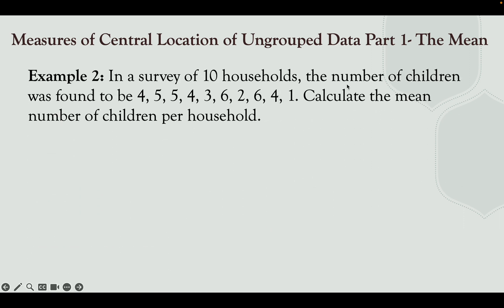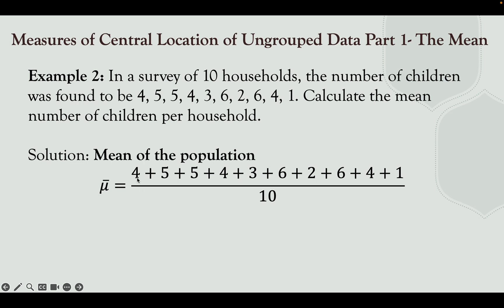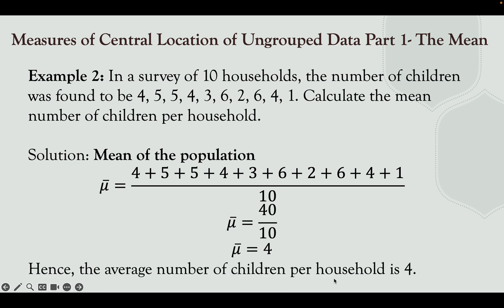Example 2: In a survey of 10 households, the number of children was found to be 4, 5, 5, 4, 3, 6, 2, 6, 4, 1. Calculate the mean number of children per household. Since this surveys all 10 households, it is a population. The mean of the population equals (4+5+5+4+3+6+2+6+4+1) divided by 10, which is 40 ÷ 10 = 4. Hence, the average number of children per household is 4.